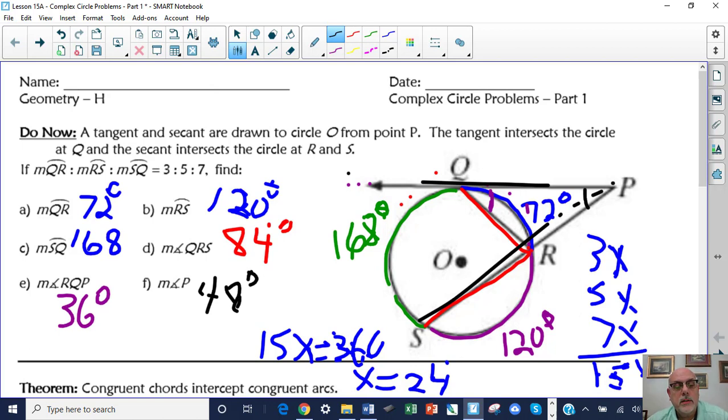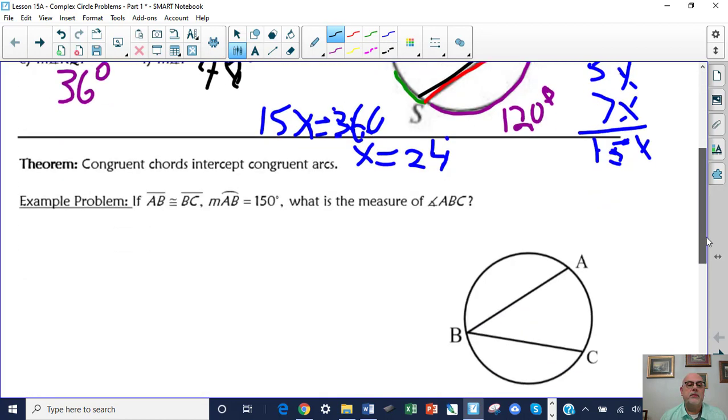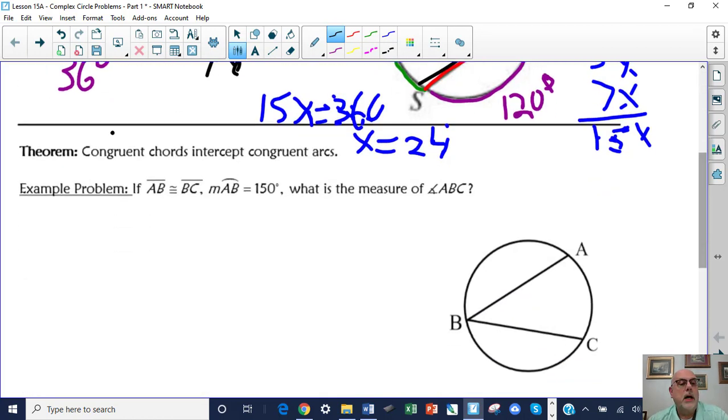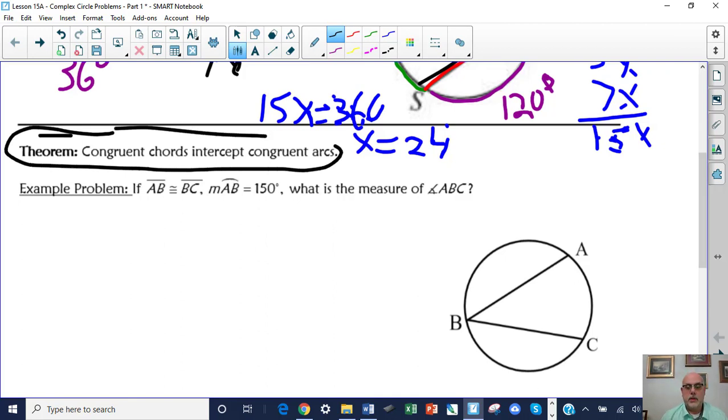All of these are on the reference sheet. There was a screencast about it. I gave you some practice yesterday. So you need to always look at how is the angle formed, because that tells you how you determine the measure of the angle. Now, congruent chords intercept congruent arcs. That's important.